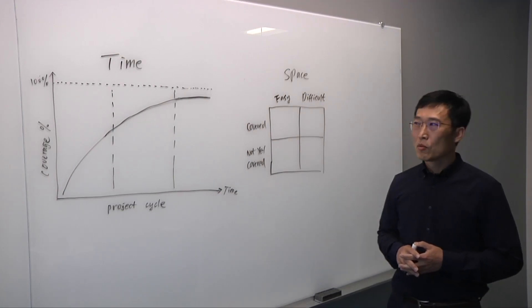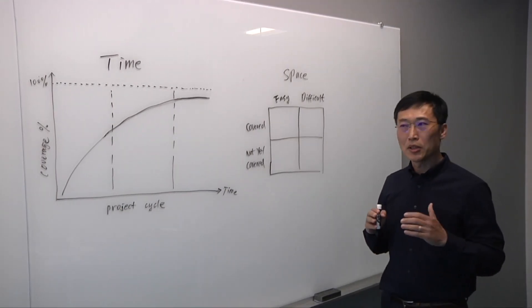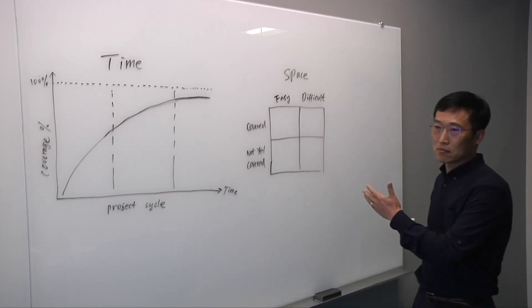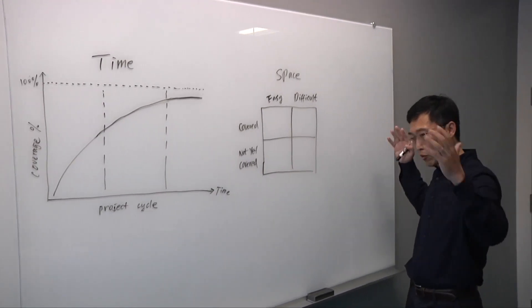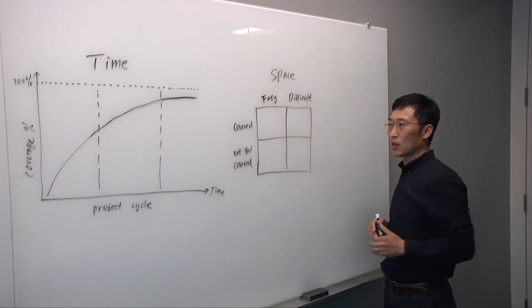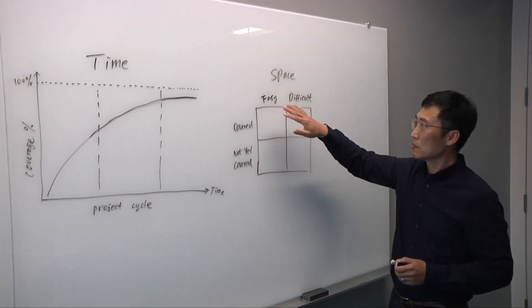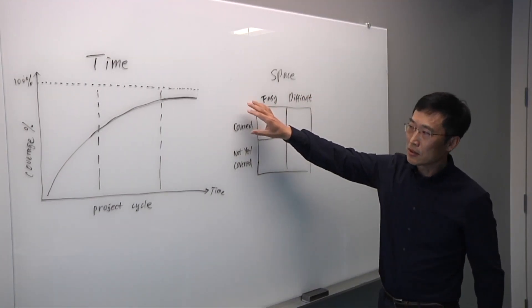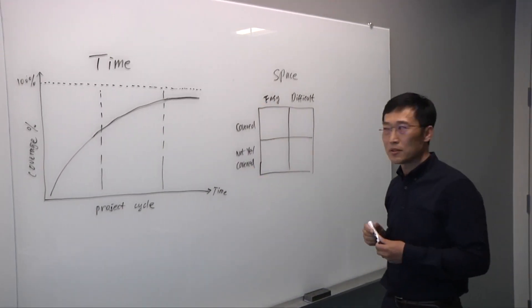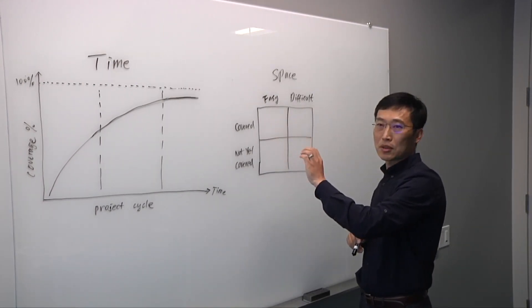What are we looking at? What we have on the whiteboard, I would like to look at coverage in terms of space and time. Let me talk about if we look at what we need to verify as a whole in this quadrant. If we divided all the coverage objects we want to cover, let's say easy and difficult, and covered already or not yet covered. Then we have this quadrant. If you look at each quadrant, we will ask some simple questions.